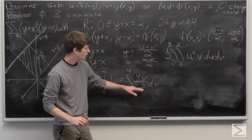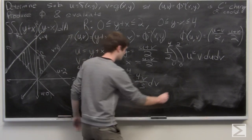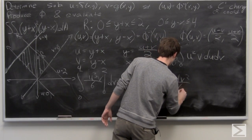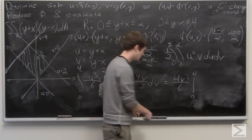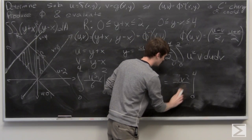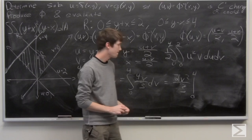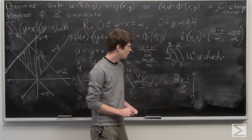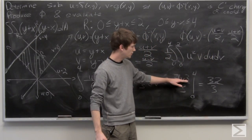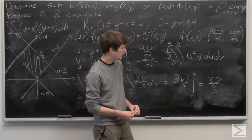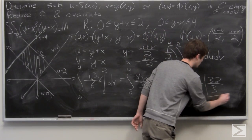So we have the integral from 0 to 4 of (4/3)v dv. Integrating: (4/3) · v²/2 = 4v²/6 = 2v²/3, evaluated from 0 to 4. When v = 4, v² = 16, so we get 2·16/3 = 32/3. When v = 0 the function equals zero. So our final result is 32/3.